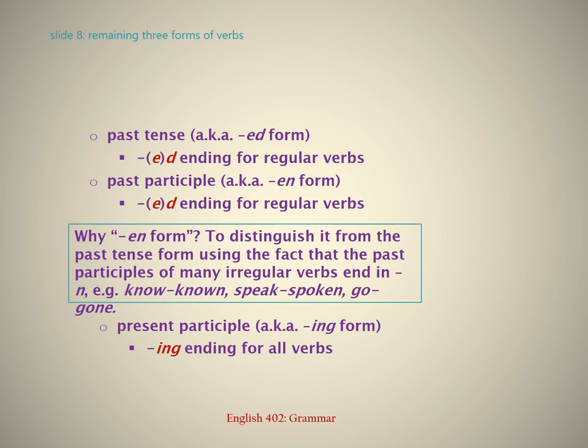For example: know/known, speak/spoken, go/gone. Fifth: present participle, also known as the ING form — ING ending for all verbs.